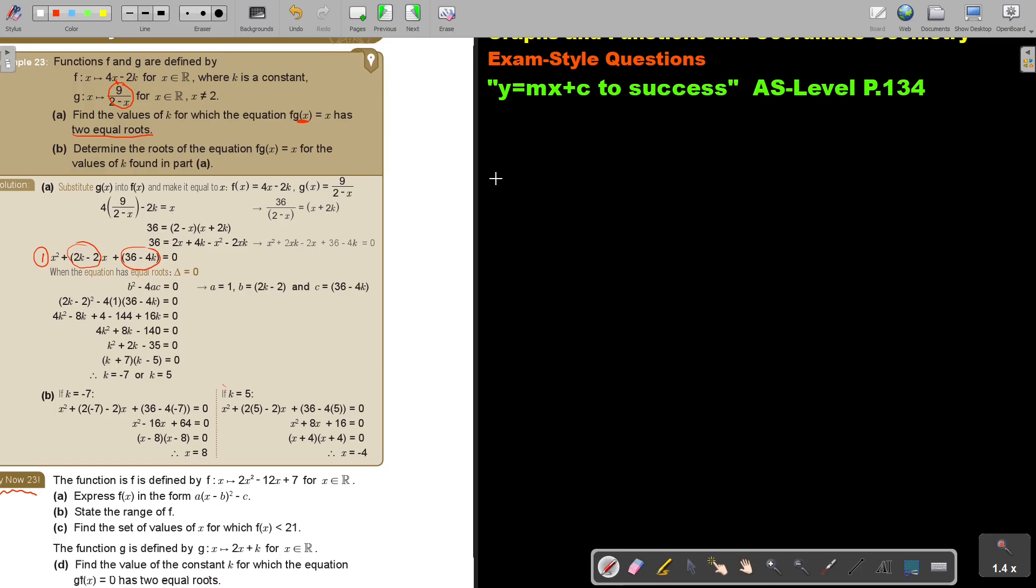The function f is defined. I prefer to write it in normal notation, just to make it more simple. So express f(x) - it's completing the square of an expression. Take 2, so it's going to be 2(x squared minus 6x, leave a space, 7 over 2, close the bracket).